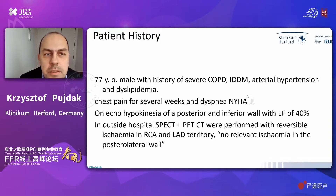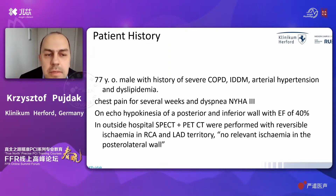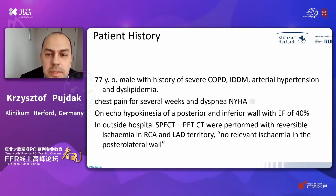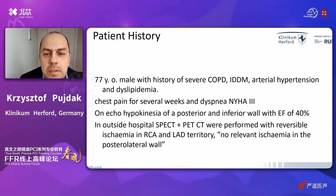The patient I would like to talk about today is a 77-year-old male with a history of severe chronic obstructive pulmonary disease, diabetes mellitus, arterial hypertension, and dyslipidemia. He has been complaining of chest pain for several weeks and dyspnea of Class 3 by the NYHA classification.